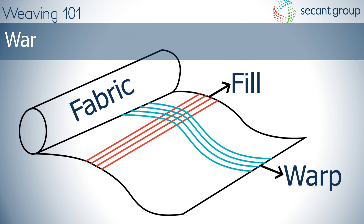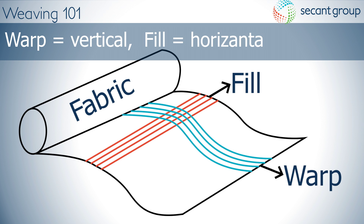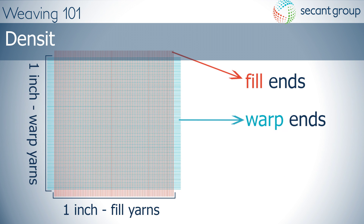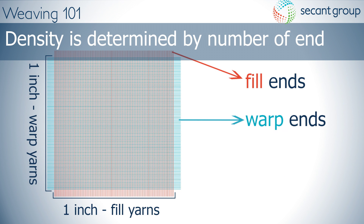Weaving is creating a fabric by placing warp threads vertically, or the length of the fabric, and inserting a filling yarn or weft thread horizontally along the width to create the fabric. The density of the fabric is determined both by the number of warp ends and the amount of picks, also known as filling yarn, in an inch length of woven fabric.